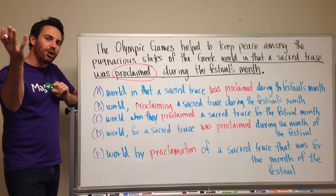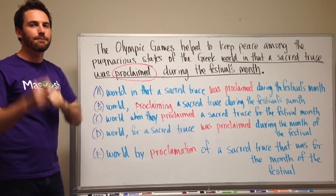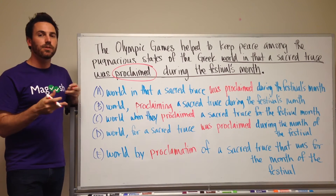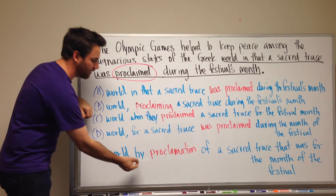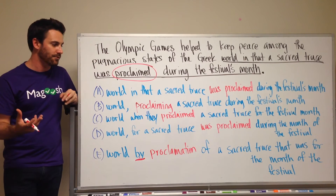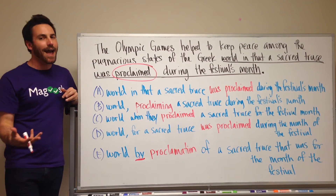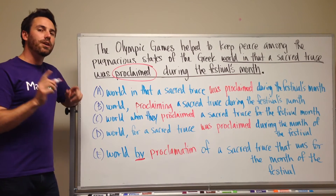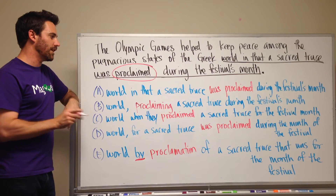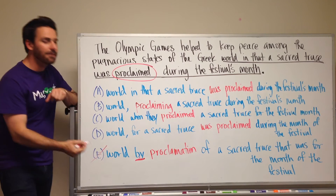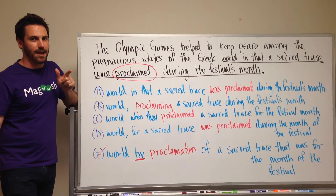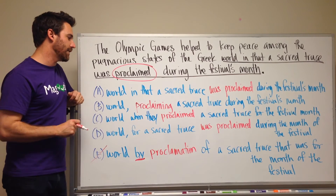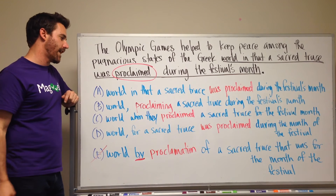When you have the option between a verb and a noun, the verb is going to be more direct and more forceful. When we use the noun form, we end up with a preposition in front, which creates a prepositional phrase — it ends up not being as direct or as clear. So when you find this in the answer choices and you have the option for the verb, eliminate the answer choice that has a noun. 'Proclamation' is more cumbersome and not as clear, so we're going to eliminate it because it's the noun form.